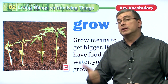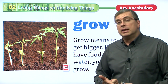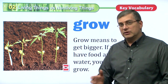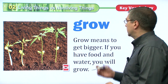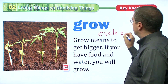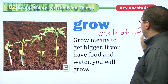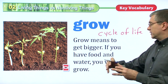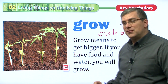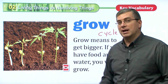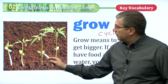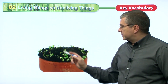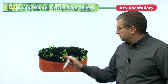All living things grow — that's another characteristic of living things. Not only do they need to survive, they also need to grow. Living things change from very small babies to adults, to very old, and then they die. This is the cycle of life. 'Grow' means to get bigger. If you have food and water, you will grow. Here we can see different stages of the development of a plant — as it grows, it gets larger.